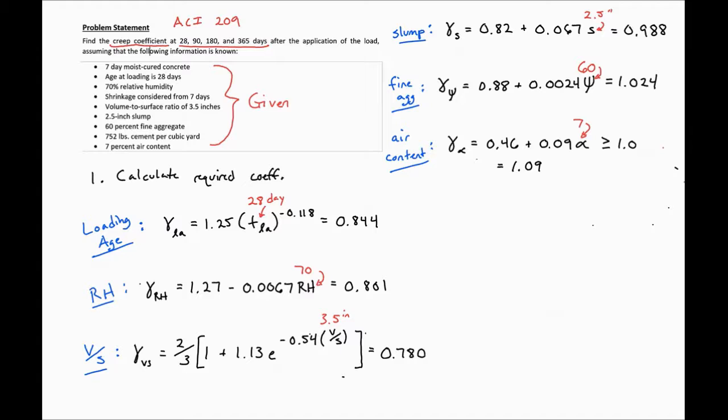So our second step, similar to shrinkage, is to use our coefficients, all of our calculated coefficients above, to find our ultimate creep coefficient.